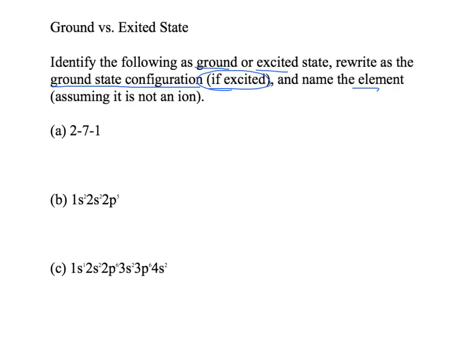So, for the first problem, 2-7-1, we know that the first energy level has a total allowable number of electrons of 2, and since we have 2 electrons here, we're good on the first energy level. The second energy level can have up to 8 electrons, and now we only have 7. Now, that would be okay if we didn't have any more energy levels, but we do have an additional energy level, and there's one electron there.